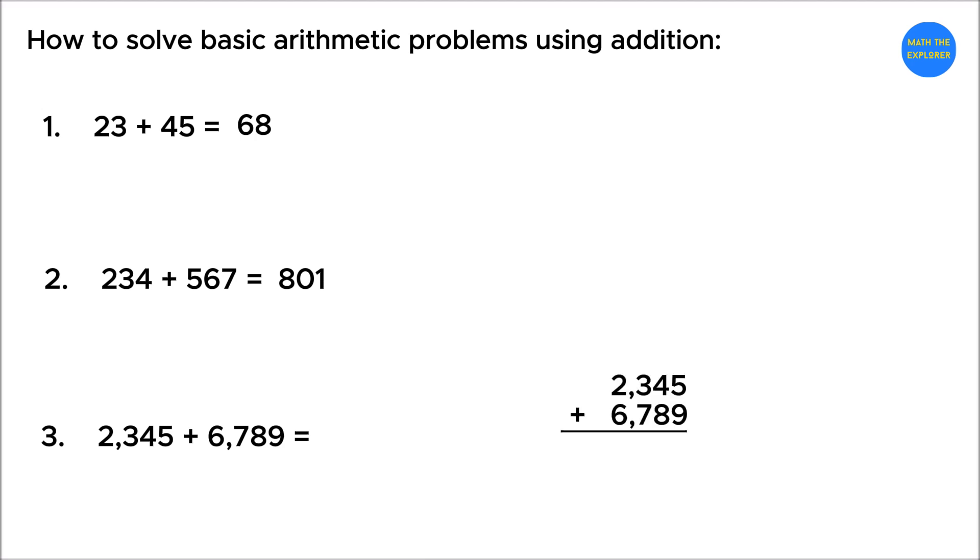To solve 2,345 plus 6,789, start by lining up the numbers by place value: ones, tens, hundreds, and thousands. Begin with the ones place. 5 plus 9 is equal to 14. Write down 4 and carry over 1 to the tens place.